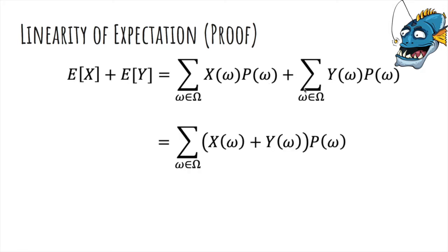And then what you can do is you can group the x and y of omega together. And then this actually just is defined to be x plus y of omega. And this is kind of like f plus g of x, and this is f of x plus g of x. And that's just the definition of the addition of functions. And this, by definition, is the expected value of x plus y, as it's x plus y, the function applied to omega, times the probability of omega.